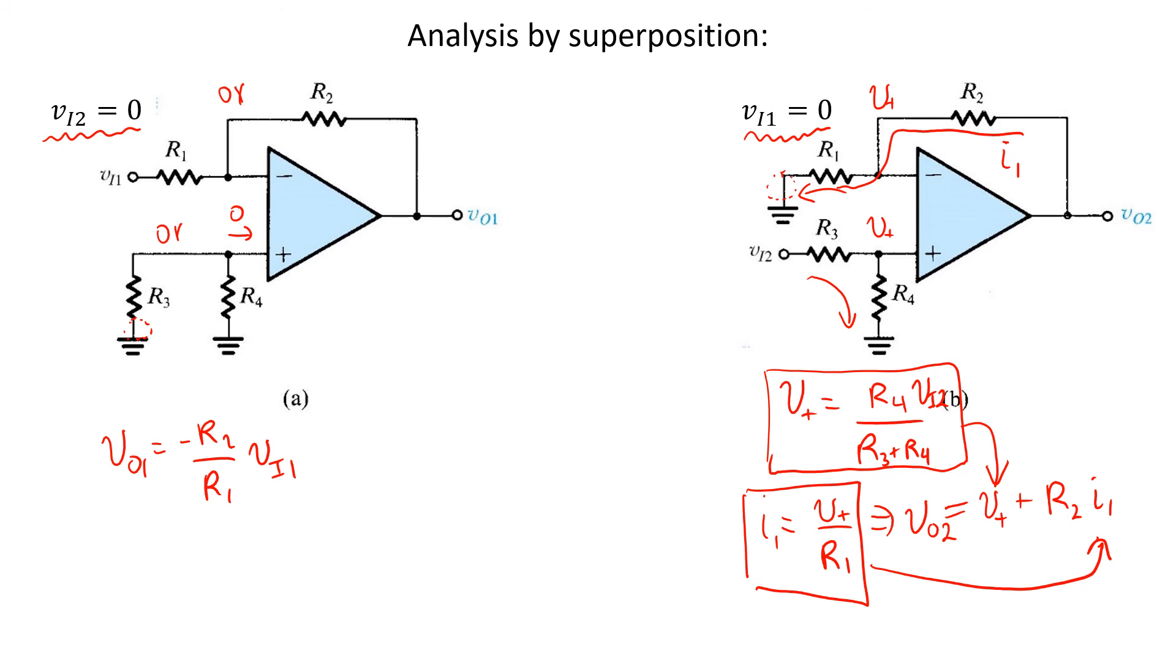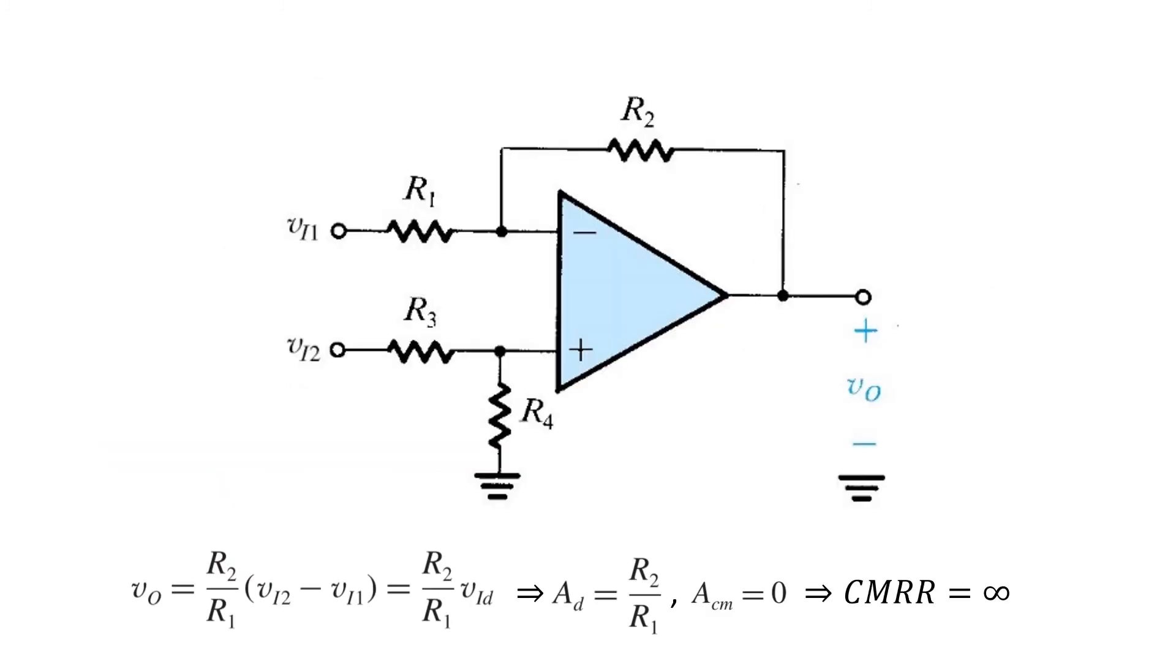If we substitute these expressions into this expression and rearrange, we would find the exact same result that we found in the last slide. And then combining the two results by superposition would give us the same result. That is, if we take the ratio of R3 and R4 correctly, we get a perfect difference amplifier with a gain of R2 over R1. Again, the criteria is R4 over R3 should equal R2 over R1. And if we ensure that, then just as we showed before, we have infinite common mode rejection.